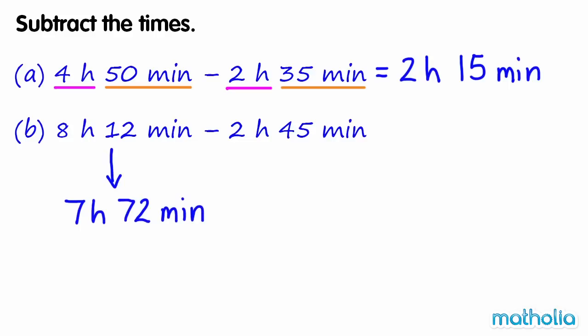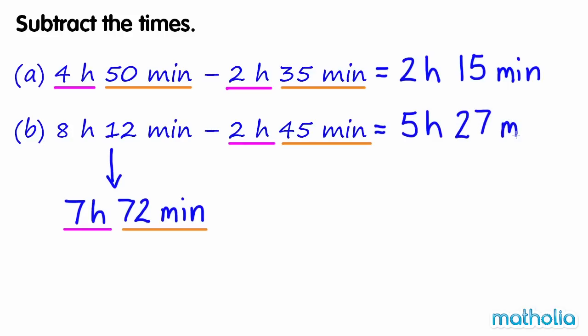Start by subtracting the hours: 7 hours minus 2 hours equals 5 hours. Next, subtract the minutes: 72 minutes minus 45 minutes equals 27 minutes. So 8 hours 12 minutes minus 2 hours 45 minutes equals 5 hours 27 minutes.